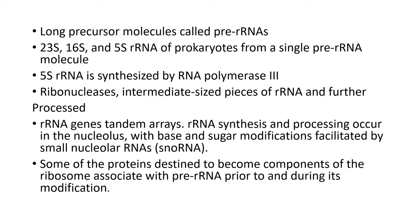The ribosomal RNA synthesized as nascent or precursor ribosomal RNA is further trimmed and cleaved by certain nucleases known as RNases, which may be exonucleases or endonucleases. RNases (ribonucleases) are used for excision and trimming of the precursor ribosomal RNA. In prokaryotes, the precursor ribosomal RNA gives rise to three species: 23S, 16S, and 5S ribosomal RNA.